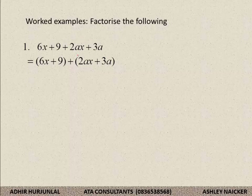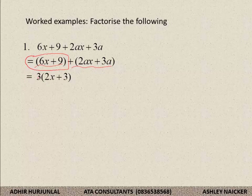Take 6x plus 9 as being one group. Take 2ax plus 3a as being another group. What I am showing you here is just how to get it by showing every step — you do not have to show the second step. I have grouped it into the first part and into the second part. Now I simply block the second off and concentrate only on the first. If I had given you 6x plus 9, can you remove common factor? The common factor is 3, and I am left with 2x plus 3.